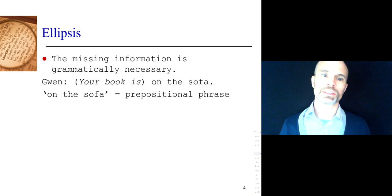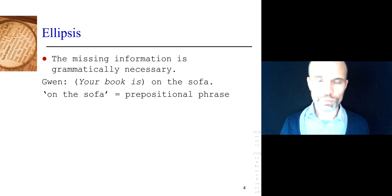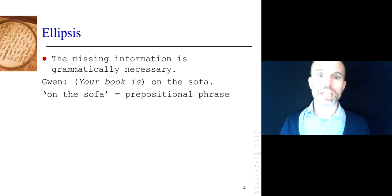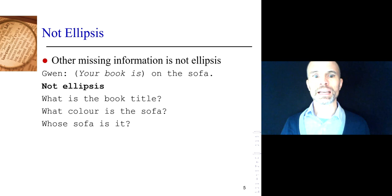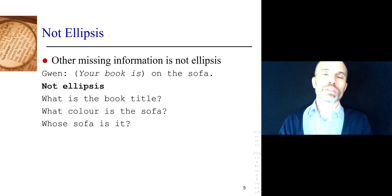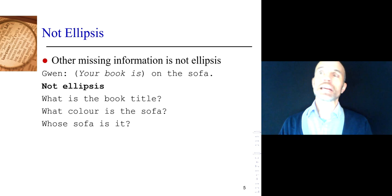It's missing information that is grammatically necessary. 'On the sofa' is a prepositional phrase. For language to make sense, you need a clause — a verb and usually a subject. If you say 'on the sofa,' there is no verb and no subject. We can't make sense of it alone. Does it mean your dog is on the sofa? So it's grammatically necessary information — necessary in the sense that we need it to make sense. It's not other stuff like which book it is or what color the sofa is. 'Your book is on the sofa' is grammatically complete.